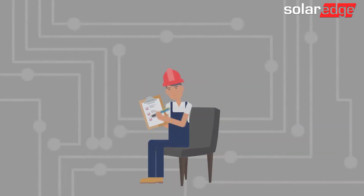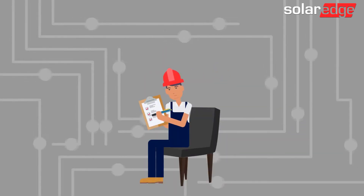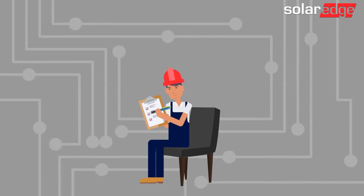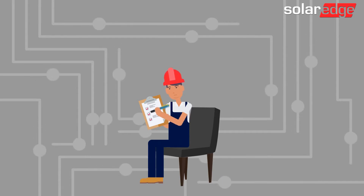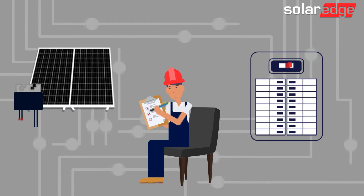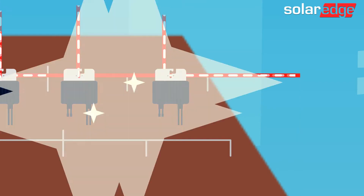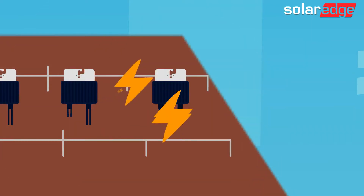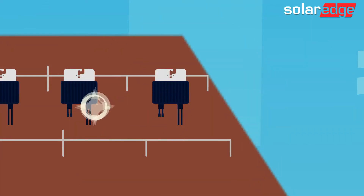An arc fault is when the inverter is detecting a gap or space between conductors on either the AC or DC side of the system. That detected gap will create an electrical spark or arc between the conductors. If the issue on site is not resolved, it could pose a fire risk.